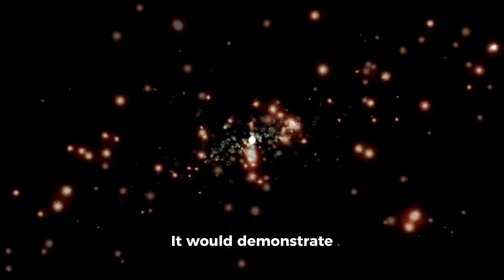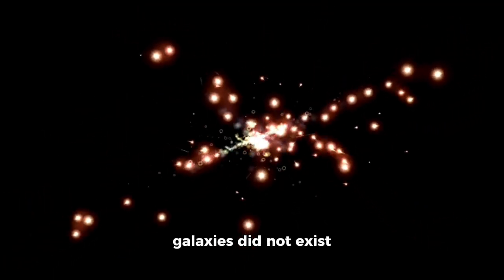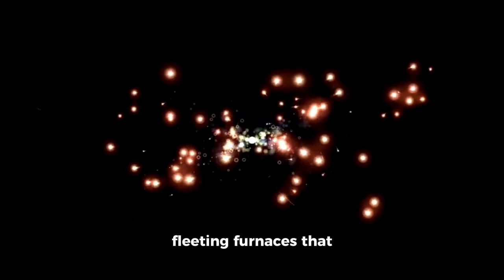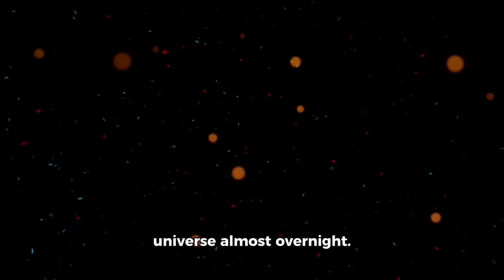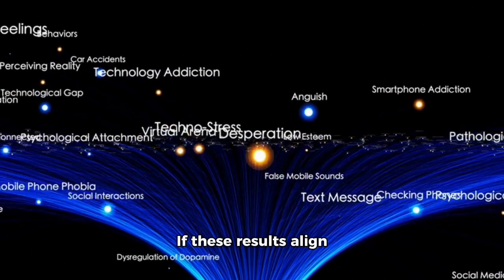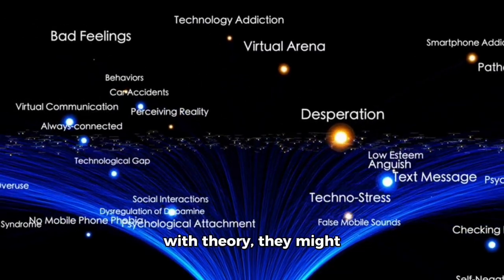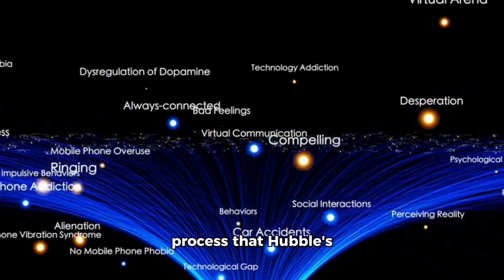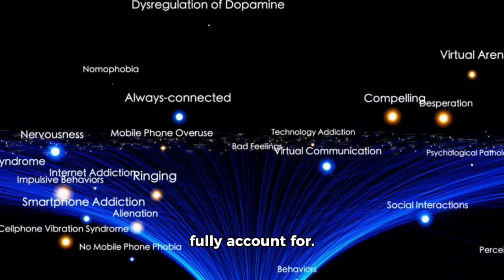Detecting them now would not just fill in a gap in cosmic history, it would rewrite the opening act. It would demonstrate that the initial galaxies did not exist as slow, dim embers, but as brilliant yet fleeting furnaces that transformed the universe almost overnight. If these results align with theory, they might help explain the speed of cosmic reionization, a process that Hubble's observations could never fully account for.